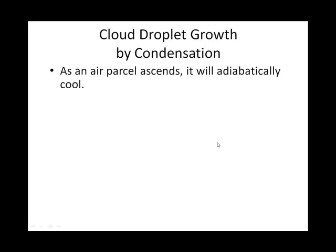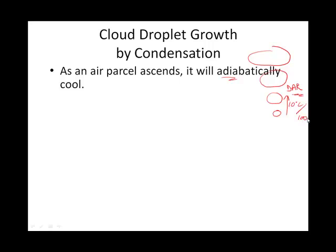Let's talk about just the very first part of the formation of a cloud. It begins with something from chapter four: as a chunk of air ascends, it expands, and as it expands, it cools. If no condensation or liquefaction is happening in that parcel of air, it cools at what we call the dry adiabatic rate. So as a parcel ascends, it will adiabatically cool at 10 degrees Celsius for every 1000 meters it rises.